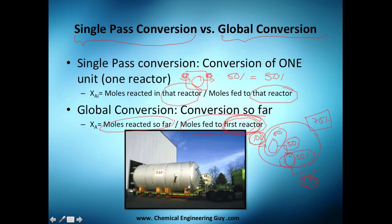The key is where you are referencing your number — are you referencing the inlet of that specific reactor, or the inlet of the entire process? A common mistake is referencing an outlet of one reactor against the inlet of another at some intermediate stream, which makes no sense. You must reference either the inlet of the first reactor for global conversion, or the inlet of that specific reactor for single pass conversion.